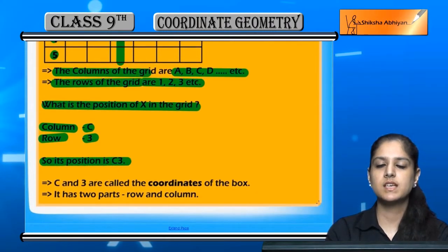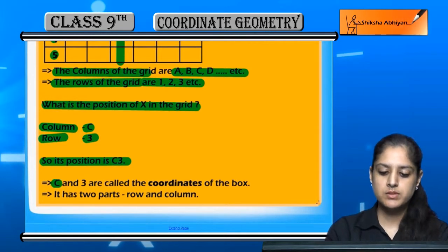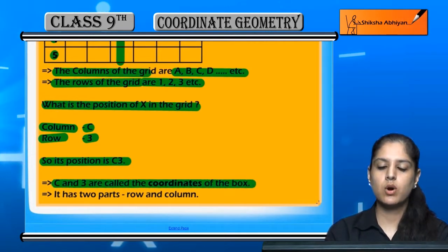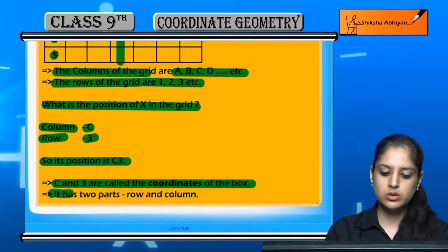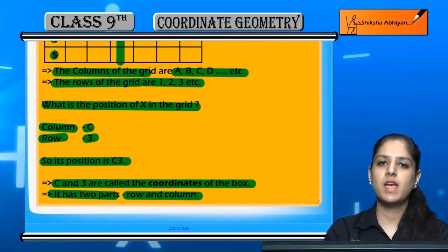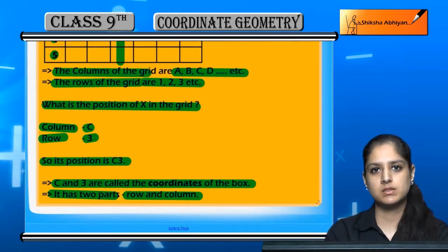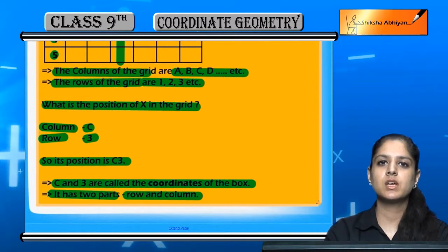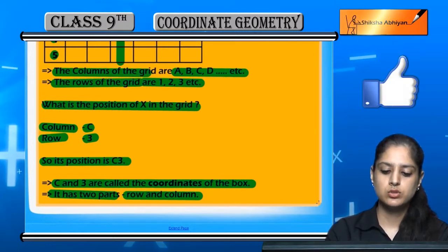C and 3 are called the coordinates of the box. It has two parts: row and column. Just as we have told the position of X, we can tell the position of points in the same way. The two factors that give a point's position are called coordinates.